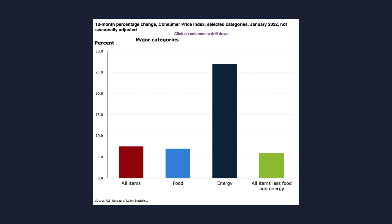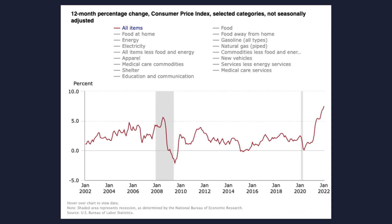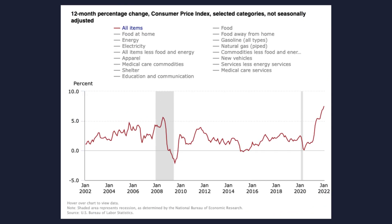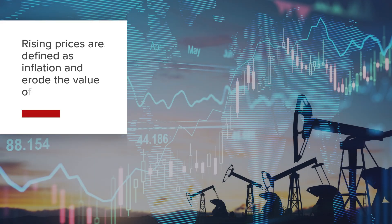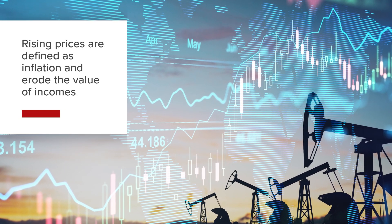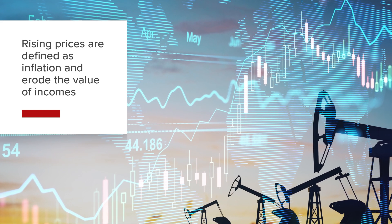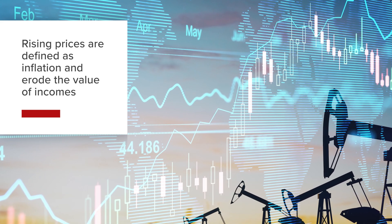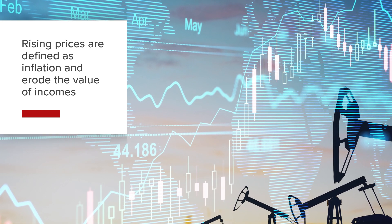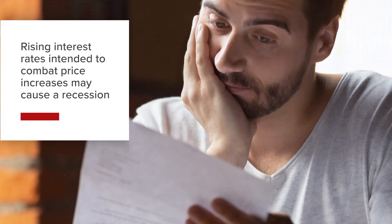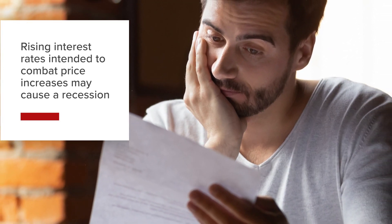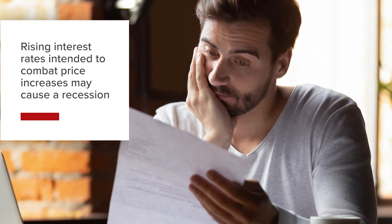Economists look to the general level of prices to examine the stability of an economy and to understand the way in which policies are working. A common method of monitoring the price level is to construct a price index — a basket of prices for popular or commonly used goods and services. The stability of the basket is paramount. Rising prices are defined as inflation and erode the value of incomes. If embedded within an economy, such price increases can spiral and undermine the economic system, forcing remedial monetary policy action. Rising interest rates intended to combat price increases by raising the cost of borrowing can cause the economy to fall into recession.